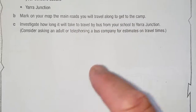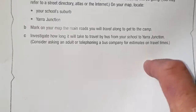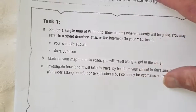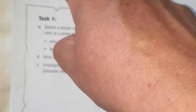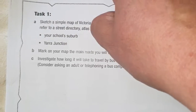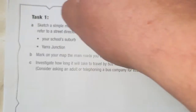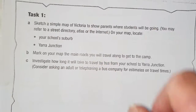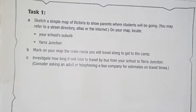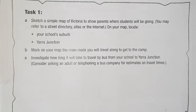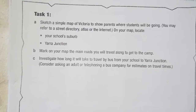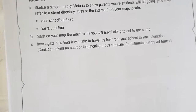Investigate how long it would take to travel by bus — again, you can do that on Google Maps. With the directions tool, if you type in Yarra Road Primary School as the start and Yarra Junction as the destination and hit enter, it will tell you how long it takes to travel by car — that's the default. You can also click on a little bicycle picture and it'll tell you how long it takes by bike, and even walking.